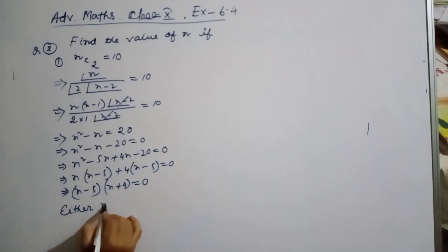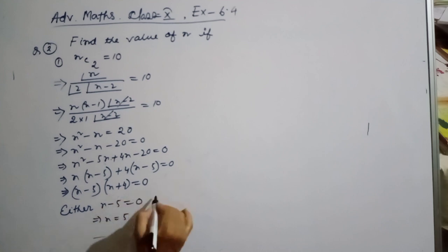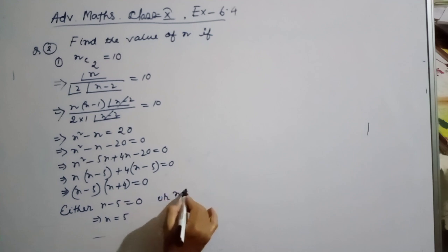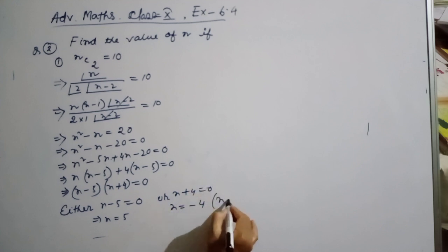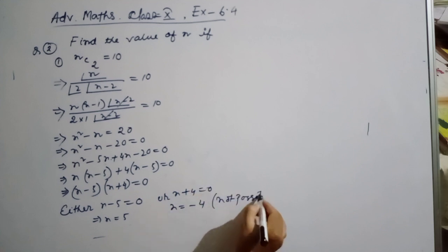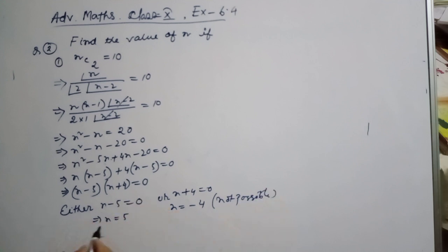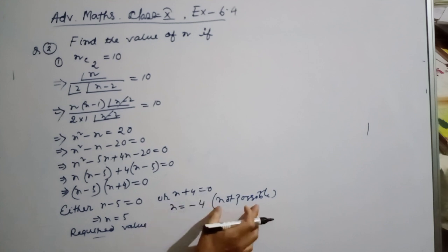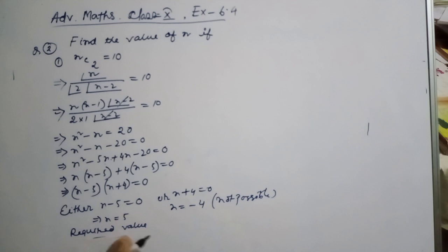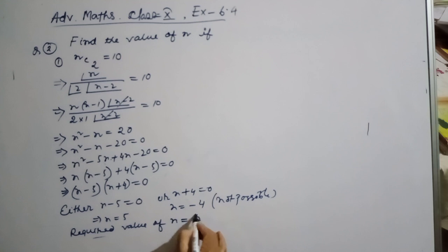So n minus 5 equals 0, therefore n equals 5. Or n plus 4 equals 0, giving n equals minus 4. Since n cannot be negative, minus 4 is not possible. Therefore the required value of n is equal to 5.